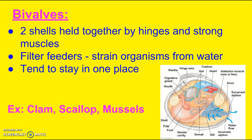Our second group is the bivalves. These have two shells that are held together by hinges and a strong muscle — your clams, scallops, and mussels. These are filter feeders, meaning they strain organisms from the water. These organisms tend to stay in one place, or if they do move, they move very, very slowly.